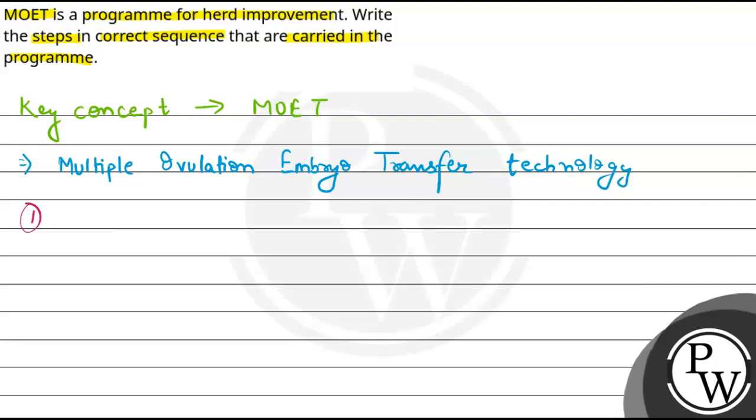There is a step that a cow is administered with some hormones. Which hormones? They are FSH, i.e. Follicle Stimulating Hormones. As we know, the name suggests that Follicle Stimulating means that they stimulate follicles.